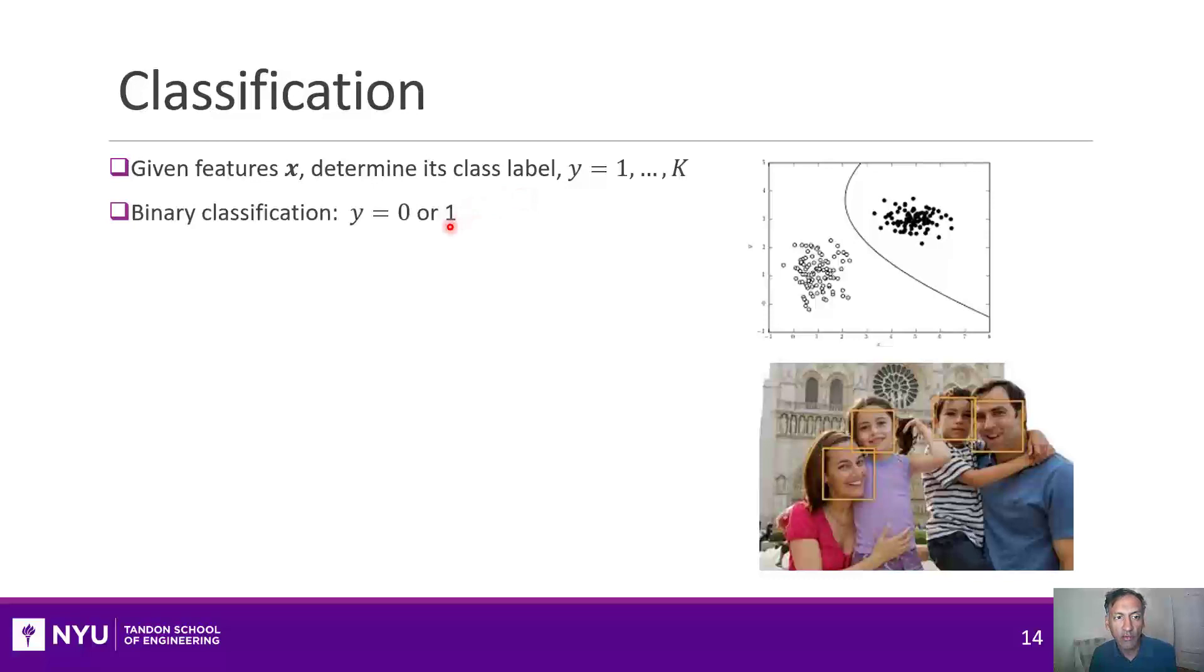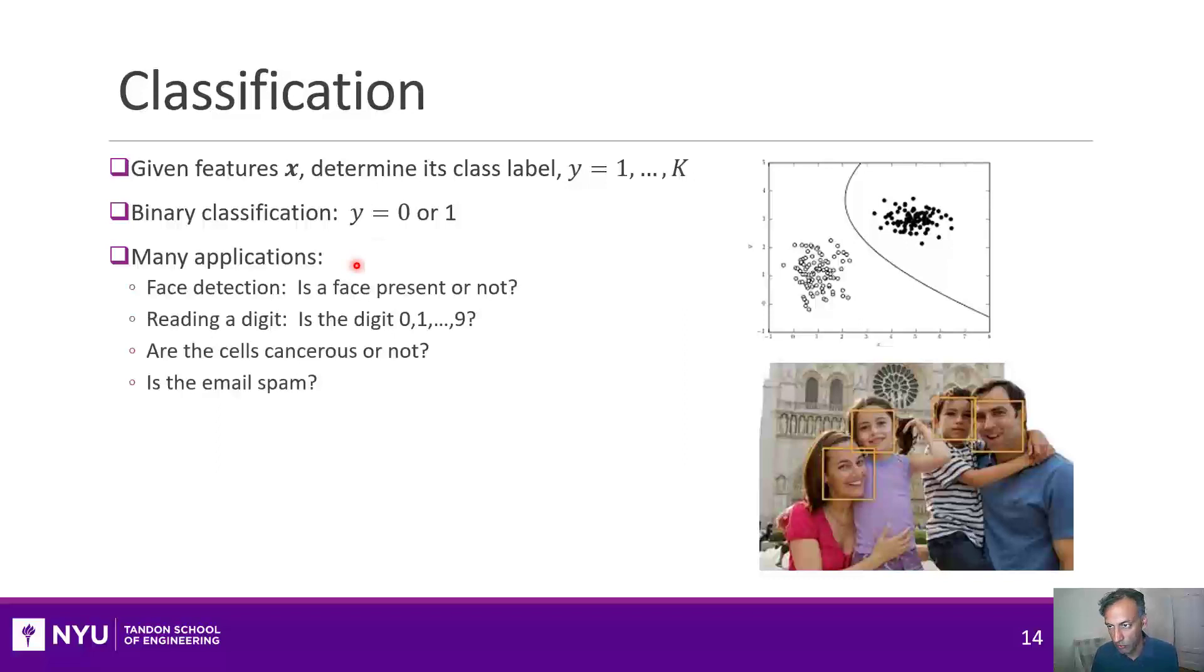In the special case of binary classification, there are only two choices. For example, in the breast cancer case, that would be either benign or malignant. Classification has many applications in medical diagnosis, face detection like I've shown here, where you're given a square of some image and you're supposed to determine is there a face in that image or not. Or maybe you're given a handwritten digit, and you want to determine if the digit is 0 to 9, so there would be 10 classes.